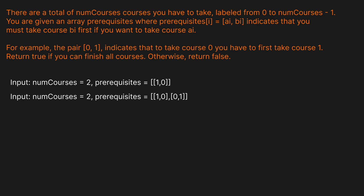Let's look at two basic examples. In the first, we have two courses and a prerequisites array — to take course one you must complete course zero, so the order is: course zero, then course one. Simple. In the second example, to take course one you need course zero, but to take course zero you need course one — that's a cycle. An infinite cycle means we can never complete the schedule, so we return false.